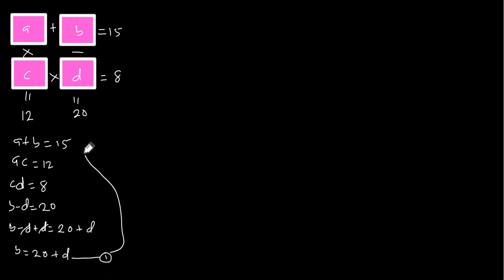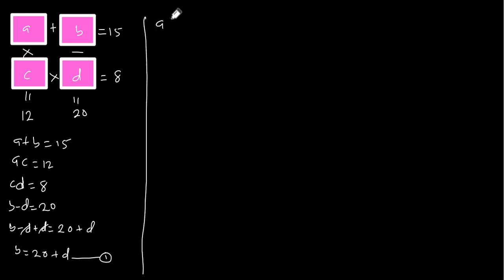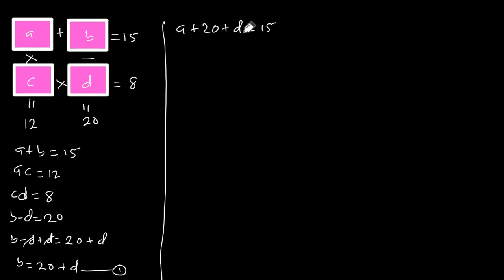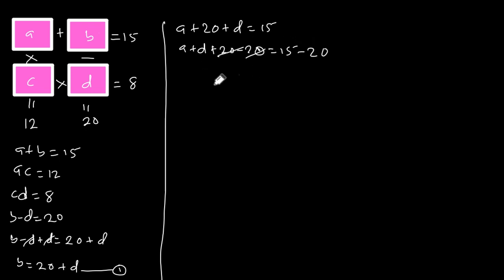From equation one I'm going to plug this into the equation A plus B equals 15. So we have A plus 20 plus D is equal to 15. Let's make A plus D the subject: A plus D plus 20 minus 20 equals 15 minus 20, so we have A plus D is equal to negative 5. I'll call this equation two.